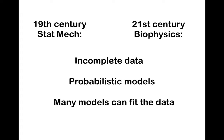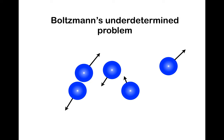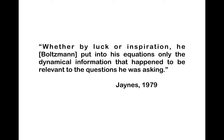This was, in a nutshell, the solution to Boltzmann's vastly underdetermined problem — to infer distributions of phase space, so distributions of coordinates and velocities of gas particles. And whether by luck or by inspiration, Boltzmann put into his equations only the dynamical information that happened to be relevant to the questions he was asking, or so said Jaynes in 1979. In order to predict distributions of gas particles, Boltzmann used only average energies and particle numbers — macroscopic measurements which, using the maximum entropy procedure, specified distributions in phase space of those gas particles.